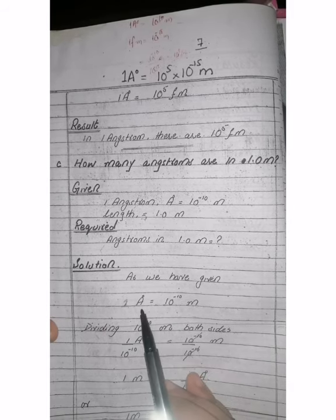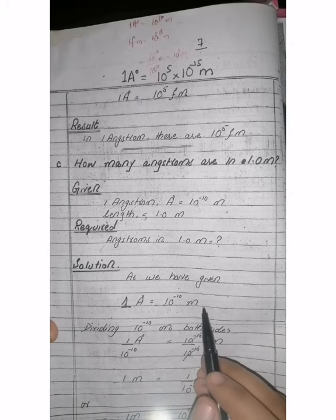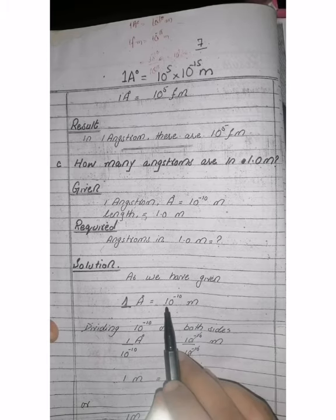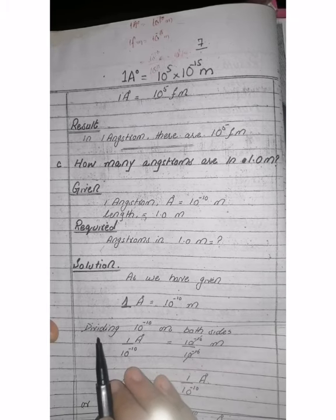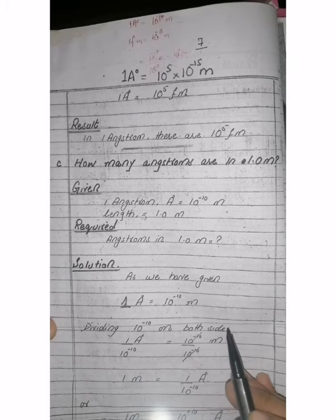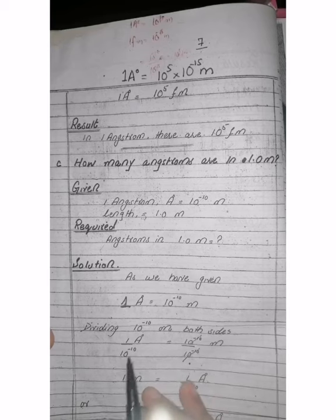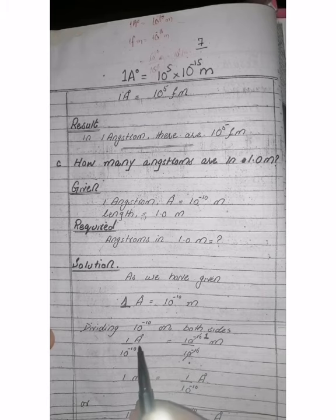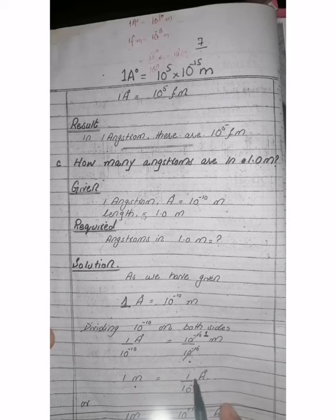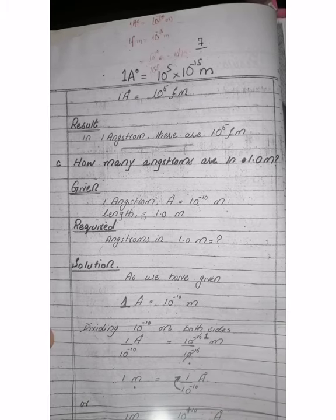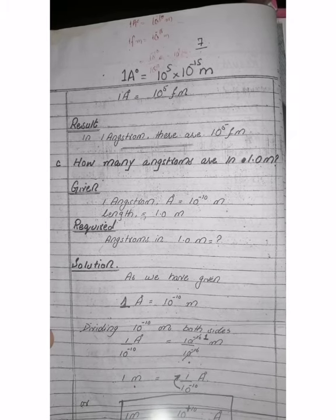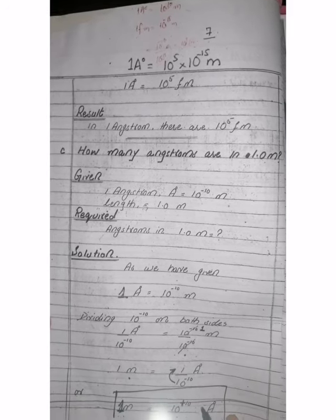Solution: as given, 1 angstrom is equal to 10 raised to the power of minus 10 meters. Now we need 1 meter. Meter is available on both sides. So I divide both sides by 10 raised to the power of minus 10. After dividing, you write 1 divided by 10 raised to the power of minus 10 angstrom on the right, and 1 meter on the left. So 1 meter is equal to 1 divided by 10 raised to the power of minus 10 angstrom, which gives 10 raised to the power of plus 10 angstroms.